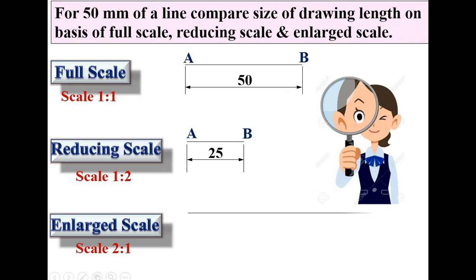Now with the enlarged scale, your length of the AB line is now 100mm. So I think you can understand easily the full scale, reducing scale and enlarged scale.